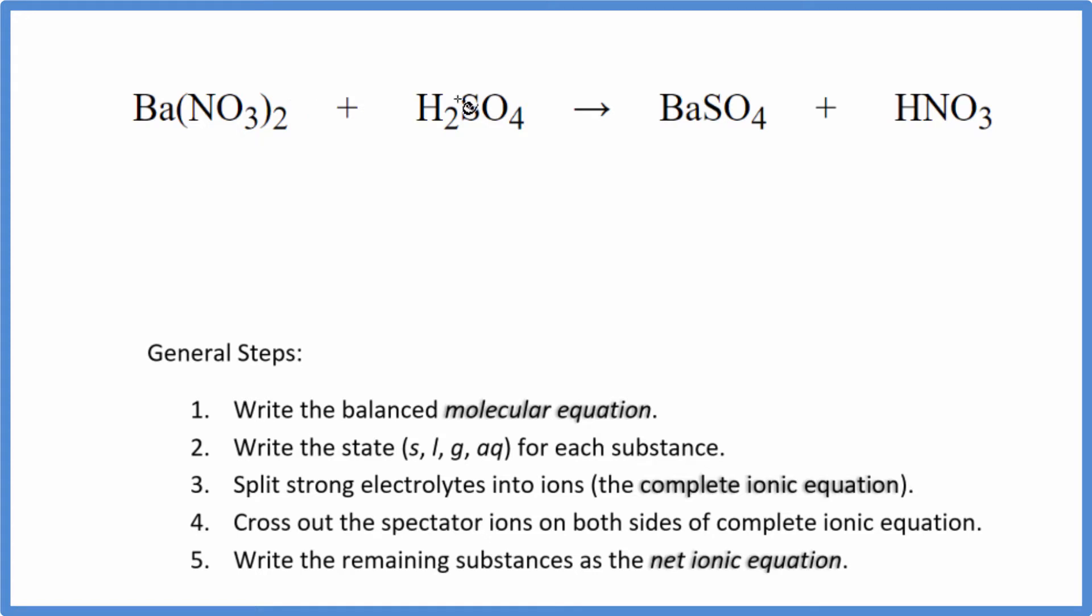I can see there's two hydrogens right here and just one here. I'm going to put a two in front of the HNO3. That balances the hydrogens, two nitrates here, and then two nitrates here. That's balanced. Sulfate, sulfate, that's good. And then barium and barium. So this is the balanced molecular equation.